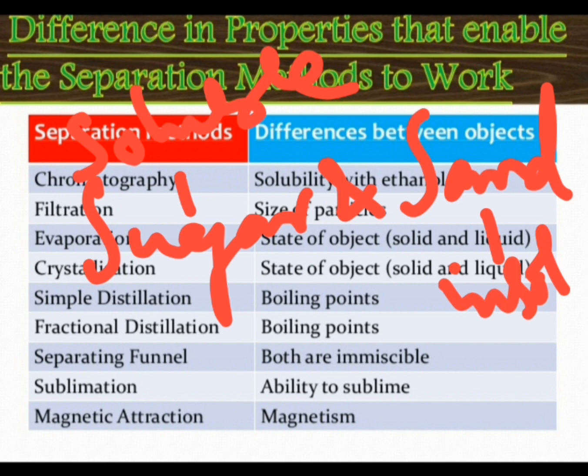So to separate the sugar and sand mixture, we add water to it. Sugar gets dissolved in water and forms a sugar solution, while sand remains undissolved. We then pass the sugar solution through a filter paper — sand remains as a residue on the filter paper, and the sugar solution is obtained as the filtrate.